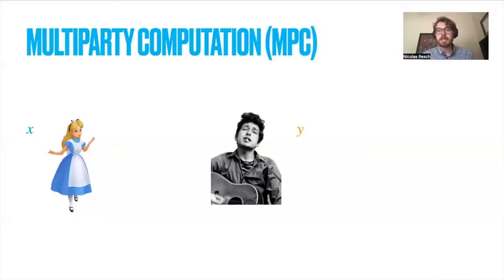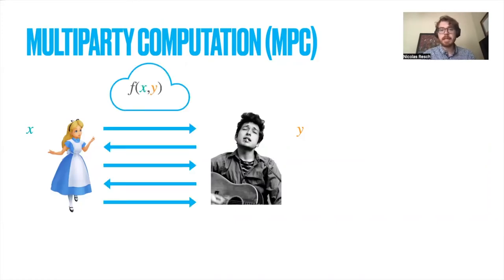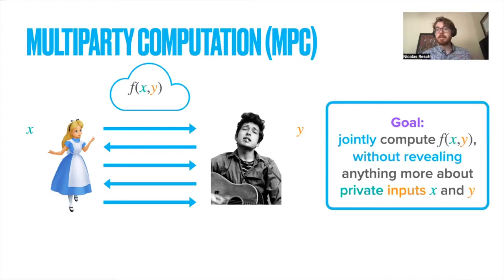This talk concerns multi-party computation when we have, say, two parties, Alice and Bob, each holding their own private inputs, but unfortunately they don't trust each other. However, together they would like to communicate back and forth such that they can compute the value of some function f applied to their private inputs, but they want to do this in such a way that nothing more is leaked about their private inputs.